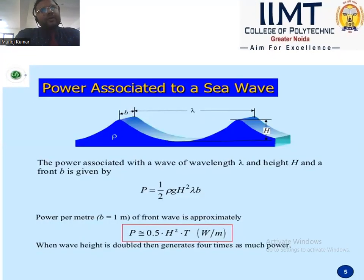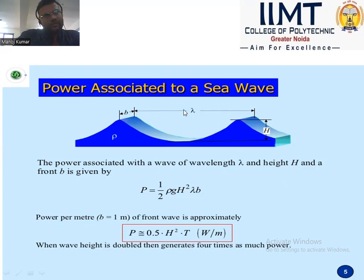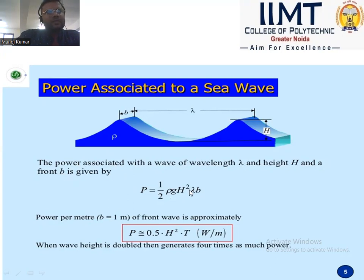The power associated with sea waves: rho is the density of water. The power associated with wavelength lambda, height h, and wave front speed v is given by P = (1/2) × rho × g × h² × lambda × v. Power per meter of wave front (v = 1 m/s) is approximately P = 0.5 × h² × T watts per meter. When wave height is doubled, it generates four times as much power.